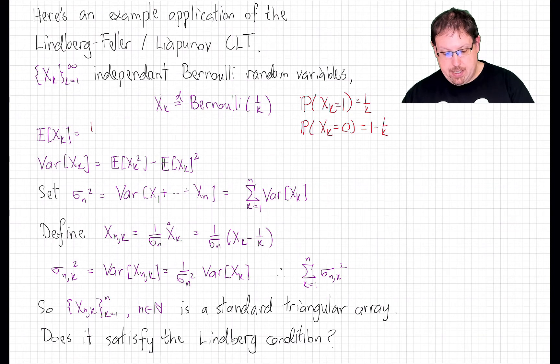The expected value of X_k is 1 over k. The variance is the expected value of the square minus the square of the expected value, but any positive power of a Bernoulli random variable is equal to itself, and so this is equal to 1 over k minus 1 over k squared.